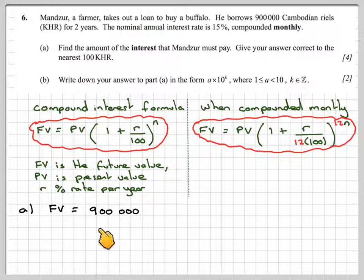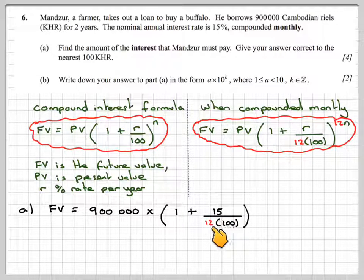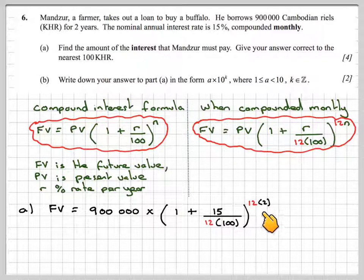In our case, the future value will be 900,000 × (1 + 15/(12×100))^(12×2). Let's work this out on the calculator.